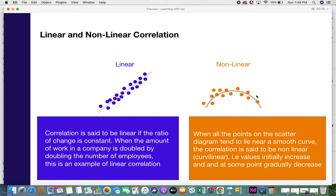When we say smooth curve, it means that the values initially increase and at some point they gradually decrease, or at some point there is a lowering of values. When there is a pattern and trend in this manner, then it's said to be nonlinear correlation. So these are the two types of correlations.